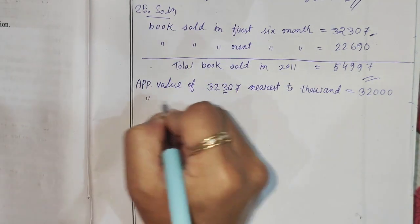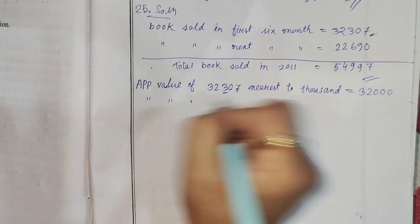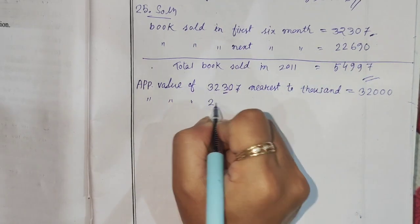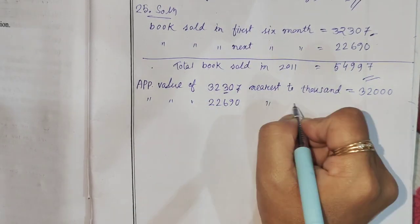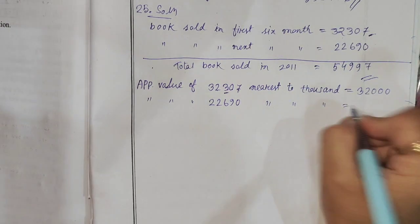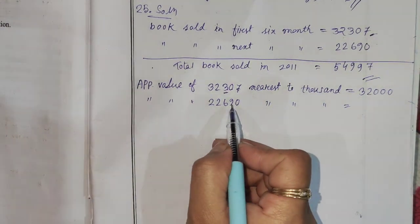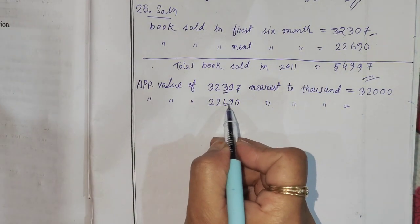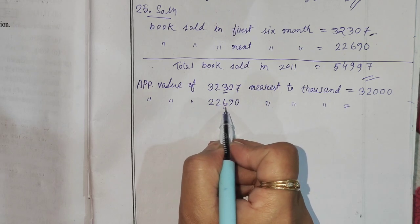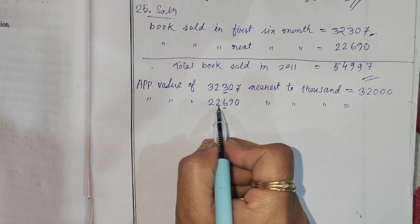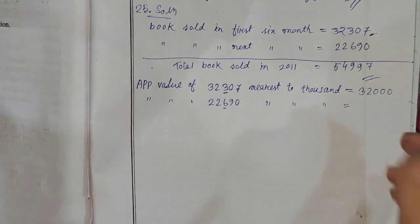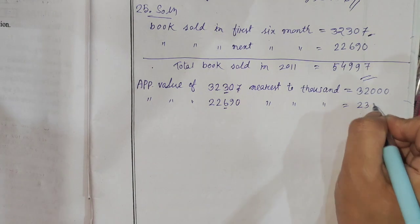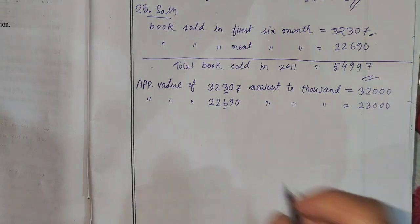The first book sold in 2010 — this is 33,000. The approximate value of 22,690 nearest to 1,000 is equal to 23,000.